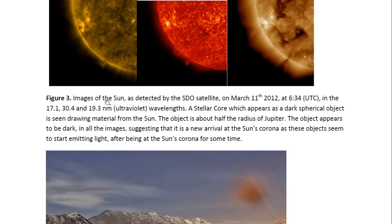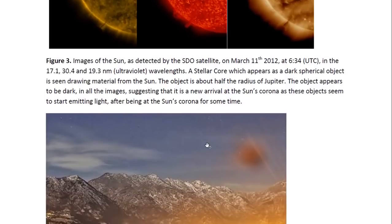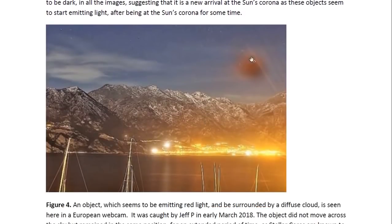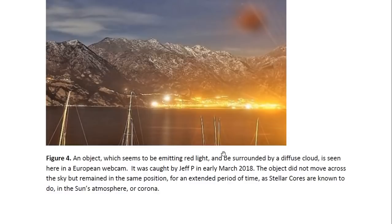It's only about half the size of Jupiter. And it appears dark in all the images, suggesting that it is a new arrival at the sun's corona, as these objects seem to start emitting light after being at the sun's corona for some time. So the fact that it's not emitting light yet suggests that it is a new arrival. And this is one of the stellar cores that is being hosted by the Earth. In other words, it's absorbing the Earth's energy.